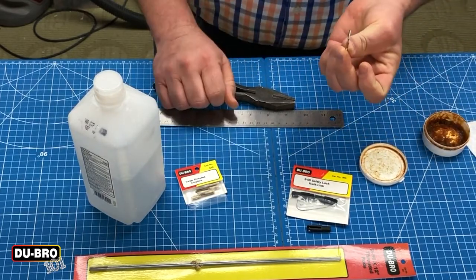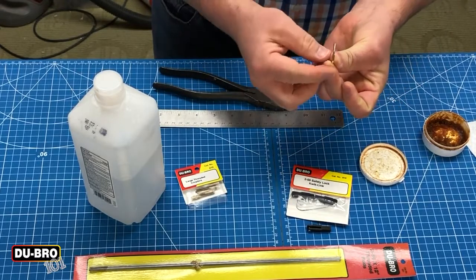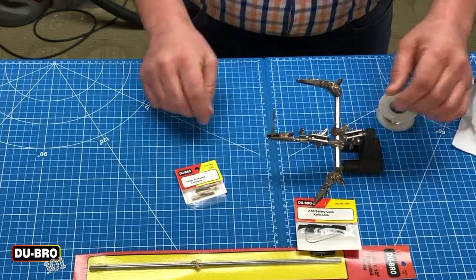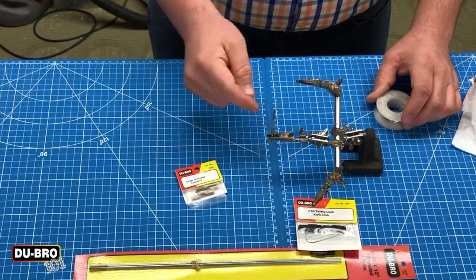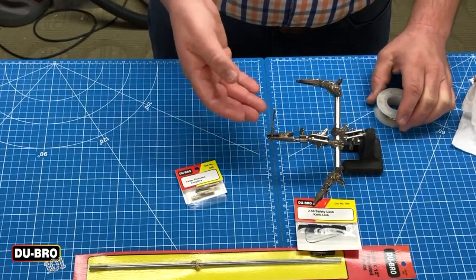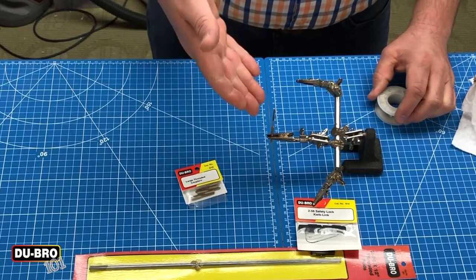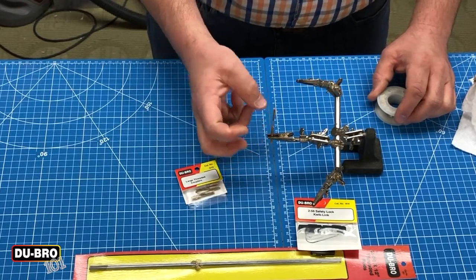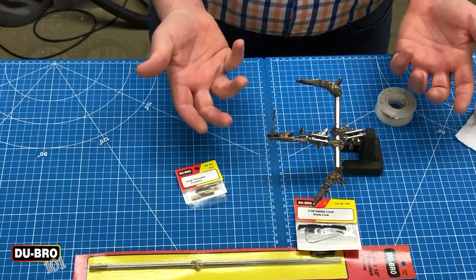All right, so using my helping hands, I've clamped the threaded coupler in. The reason we want that is we want this to act like a cup, so it's going to catch all of the solder as it melts into that cup, and we're going to try to do it as carefully as possible just so that we don't burn ourselves.